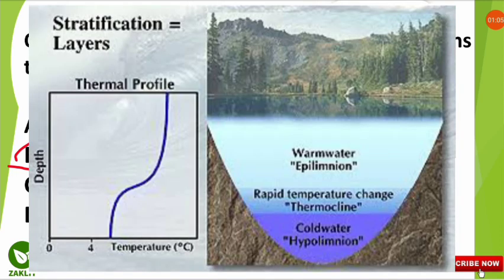You can see in this picture that the upper part is the warm water, called epilimnion. Then followed by the thermocline layer where rapid temperature change is seen — which is a frequently asked question in the NET examination. Finally, the bottom layer has cold water, called hypolimnion. These are important, kindly note them down.